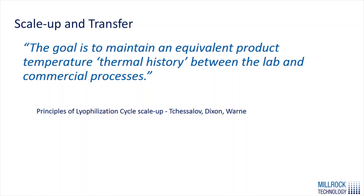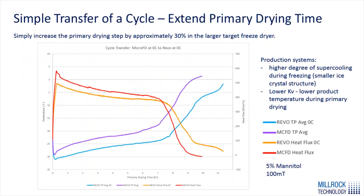Now that we've developed an optimized cycle, we want to look at how to transfer it to a next-size unit — going from lab to pilot or pilot to production. The goal when transferring is to maintain an equivalent product temperature thermal history between lab and commercial processes. One standard safe way to transfer a cycle is to maintain the same settings used on the smaller scale unit and extend primary drying time. The larger the unit you move to, the inherent Kv goes down, so if the cycle runs safely on a smaller unit, running those same settings on a larger unit will be very safe.